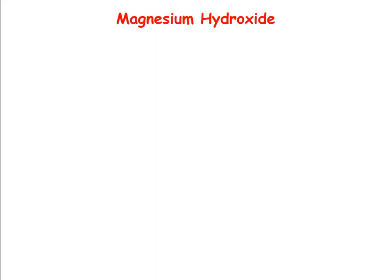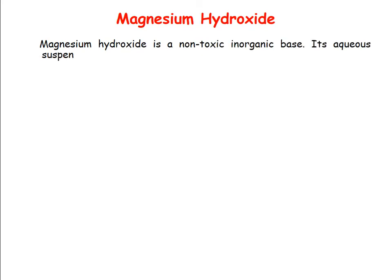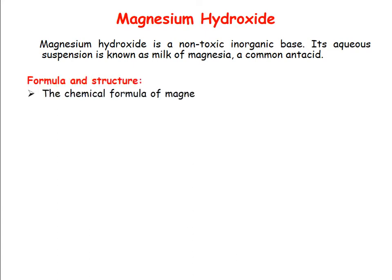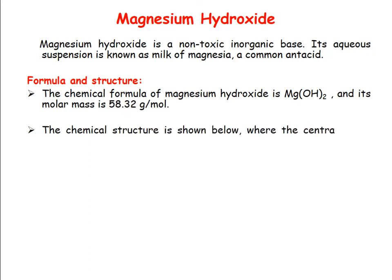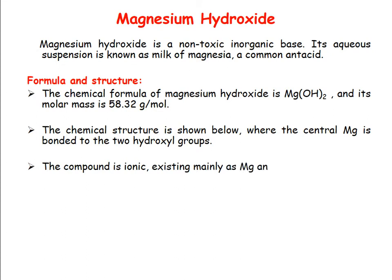Magnesium hydroxide is used as an antacid or laxative in suspension dosage form. Magnesium oxide is a non-toxic inorganic base; its aqueous suspension is known as milk of magnesia and is a very common antacid formulation. The chemical formula of magnesium hydroxide is Mg(OH)₂ and its molar mass is 58.32 gram per mole. The central magnesium is bonded to two hydroxyl groups; the compound is ionic, existing as magnesium and hydroxide ions.